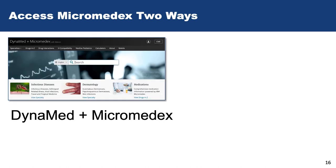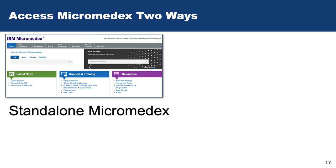You can access Micromedex two ways. If you use the Dynamed plus Micromedex database, you get seamless access to both databases. In it, you can access drug monographs, check interactions, and access medication calculators. You can also use the standalone version of Micromedex to get a little bit more information regarding drugs. In that tool, you can also get patient handouts and compare drugs side-by-side.